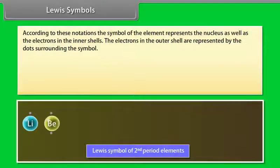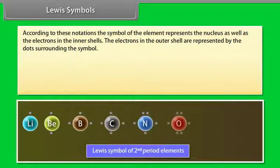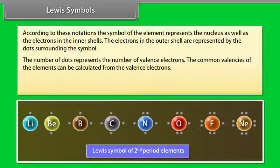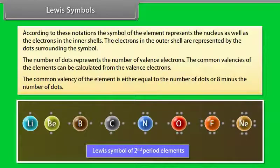Lewis symbols. According to these notations, the symbol of the element represents the nucleus as well as the electrons in the inner shells. The electrons in the outer shell are represented by dots surrounding the symbol. The number of dots represents the number of valency electrons. The common valency of the element is either equal to the number of dots or 8 minus the number of dots.